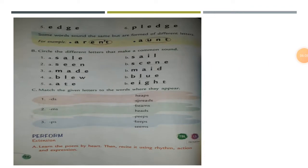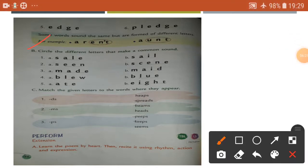I hope everyone understood. Page 77, circle the letters that make the last consonant sound DGE. And number B, circle the different letters that make a common sound. C, match the given letters to the words where they appear.